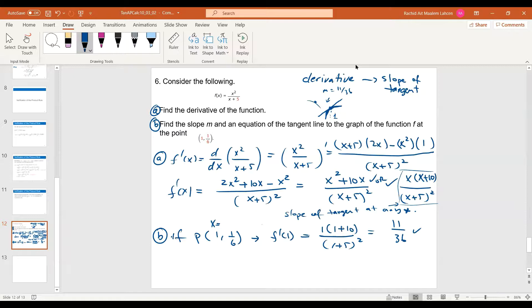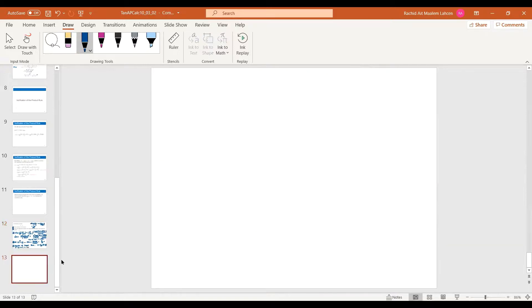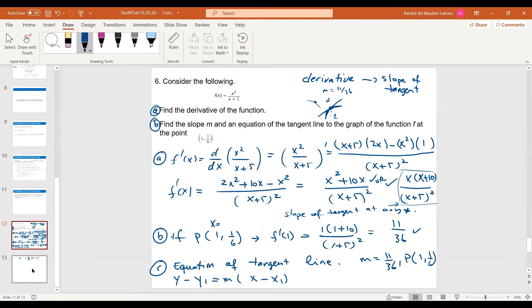Now the next step, if you're asked for the equation. So what is the equation of that tangent line? Well, for the tangent or the equation of a line, you need the slope, which you have, and you need the point, which you have now. So you can do Y minus Y one equal M times X minus X one. So Y minus, 11 over 36. And we know X is one. And for Y is one sixth.